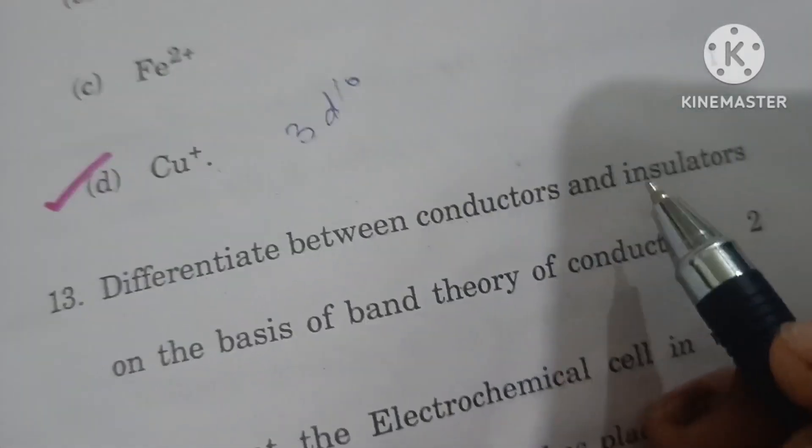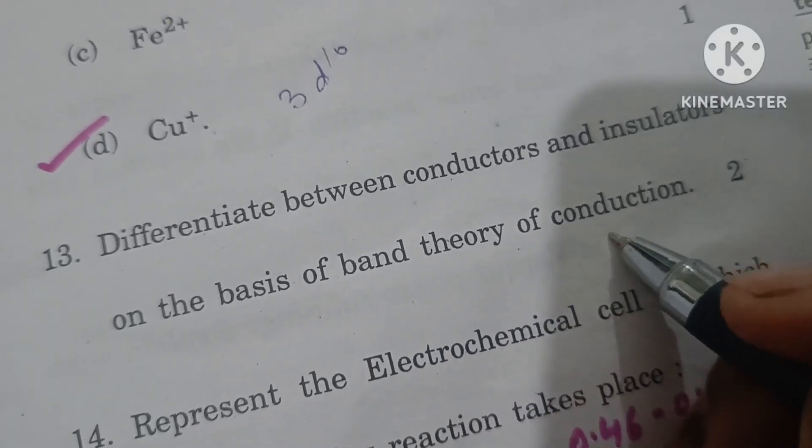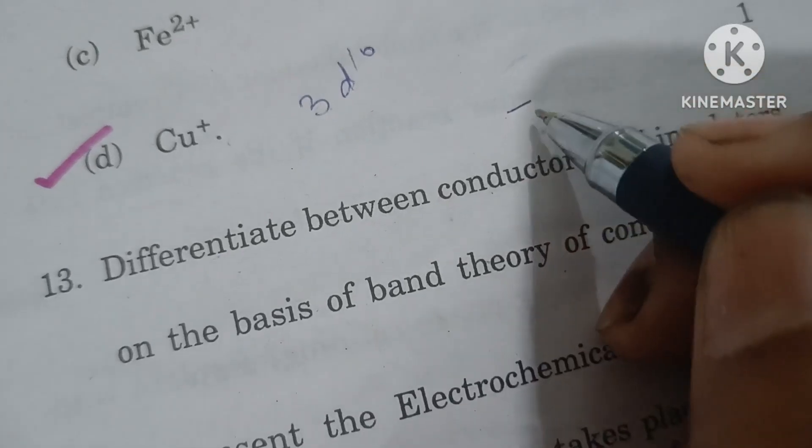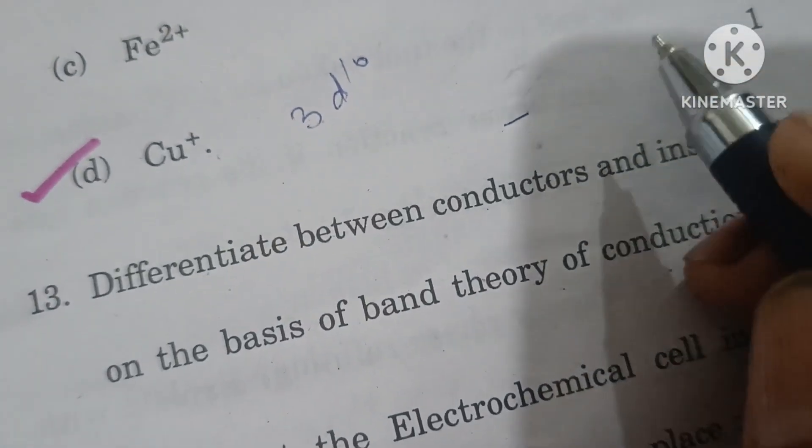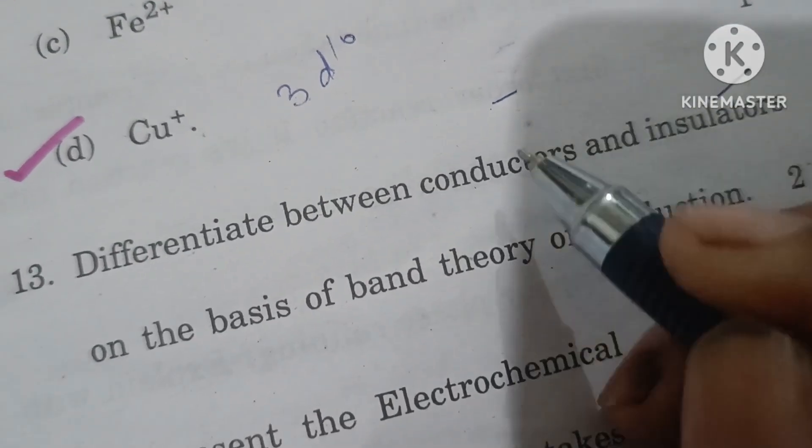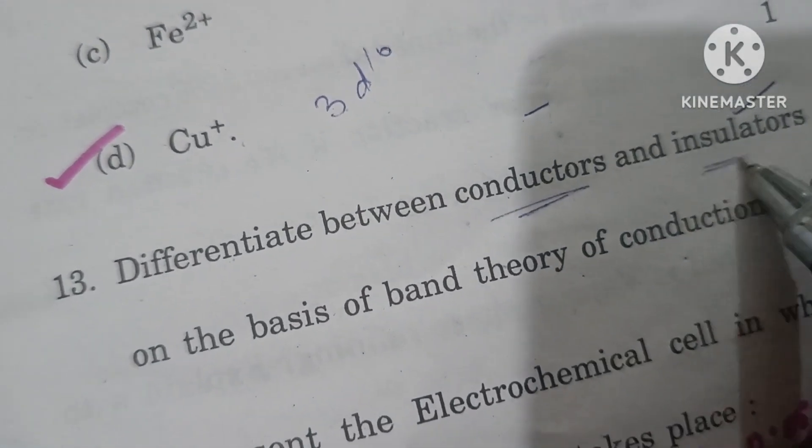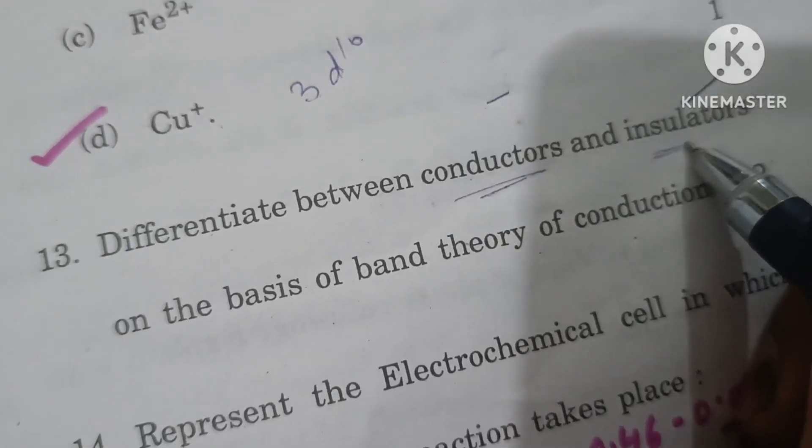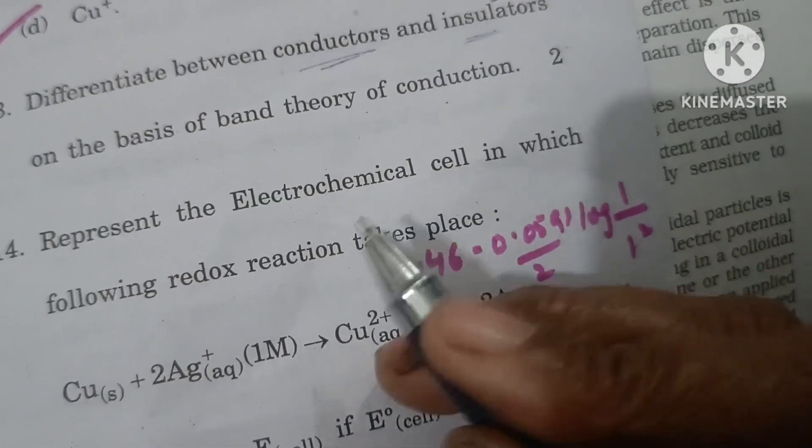Differentiate between conductors and insulators on the basis of band theory of conduction. According to band theory, the band gap in conductors is very small, whereas in insulators the band gap is very large.